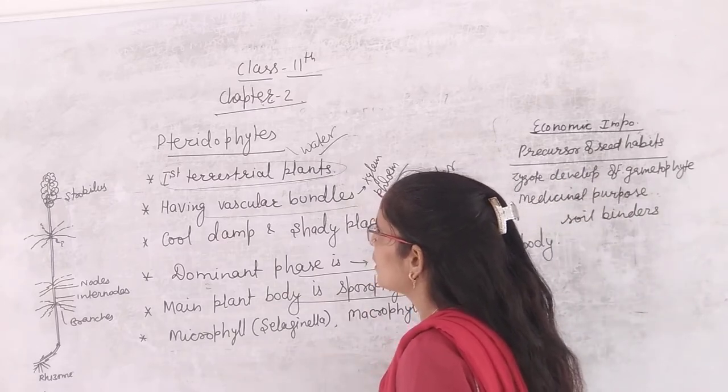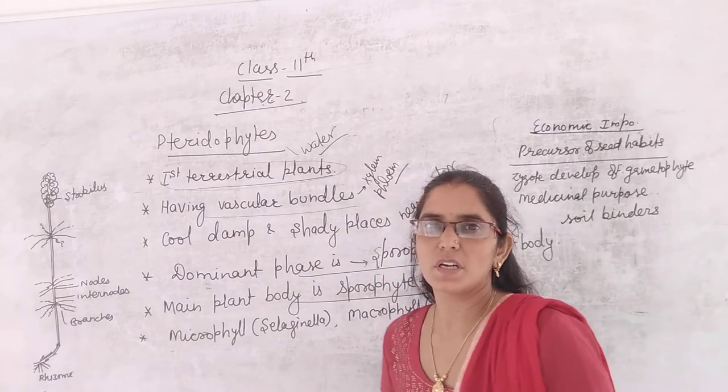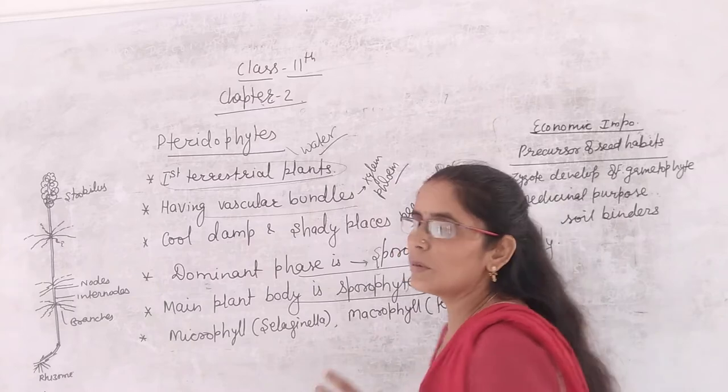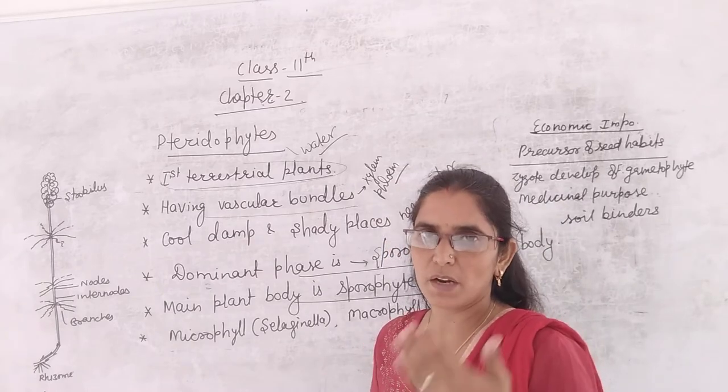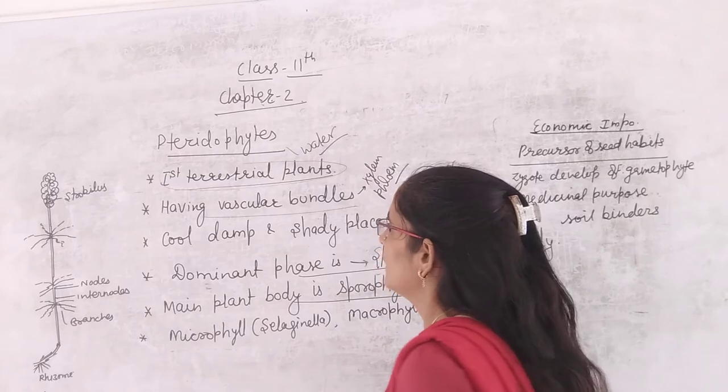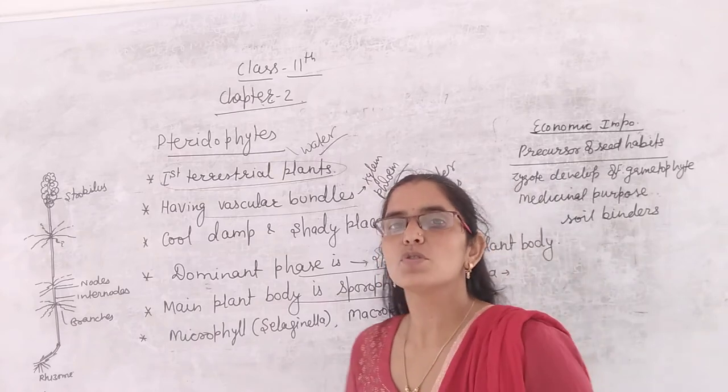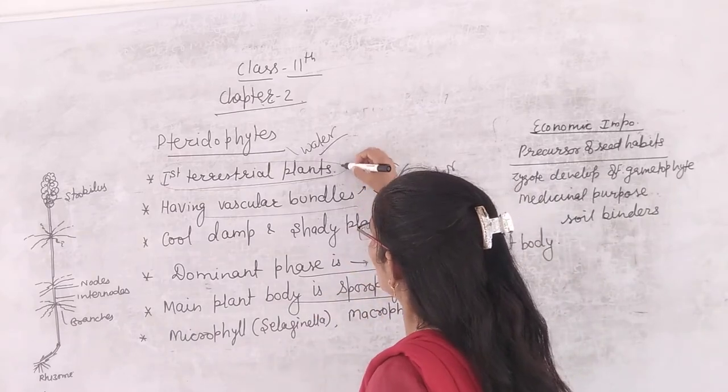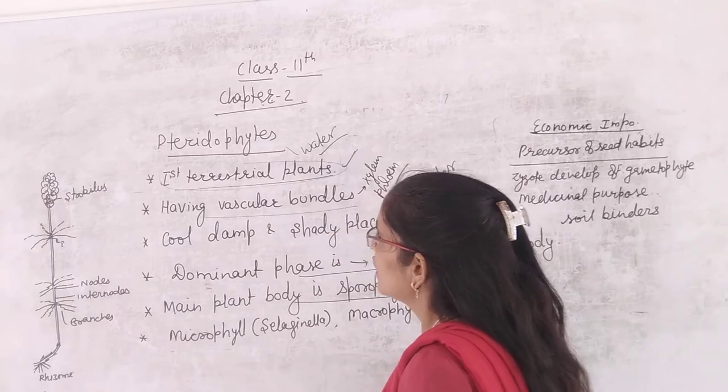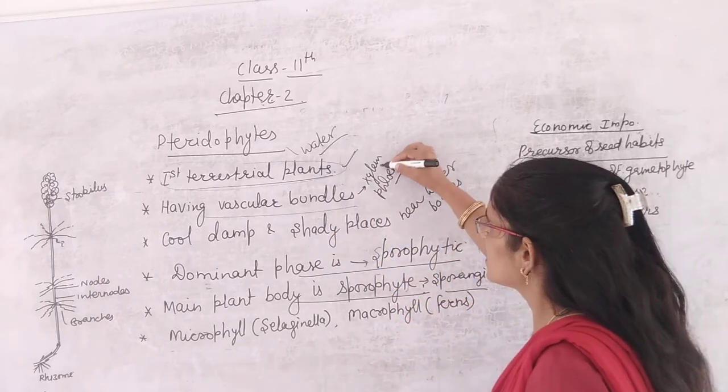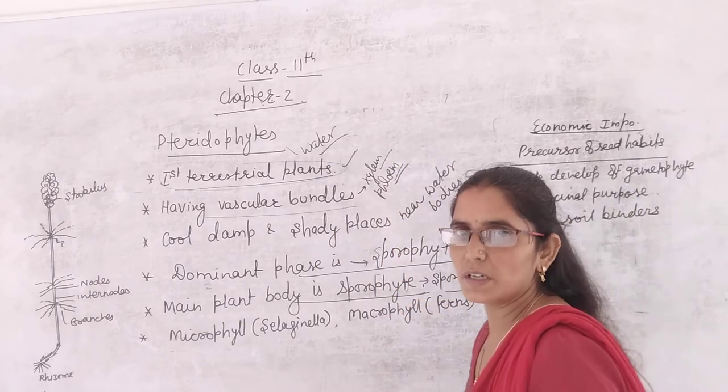Pteridophytes are the first terrestrial plants. They also require water for completing their sexual life cycle, same as bryophytes. But bryophytes were discovered before. That's why they are known as amphibians of plant kingdom. They have vascular bundles. They have xylem and phloem, which transport water and food.